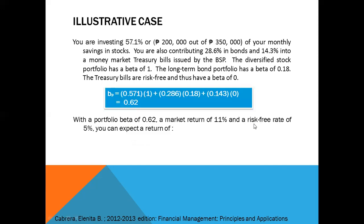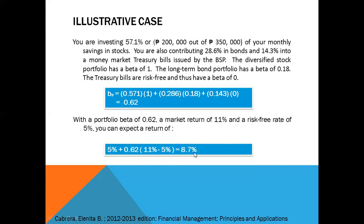With a portfolio beta of 0.62, a market return of 11%, and a risk-free rate of 5%, you can expect a return of 8.7%. That's calculated as: 5% + 0.62 × (11% − 5%) = 8.7%. If you want a higher expected return, you will have to take more risk, which can be done by increasing your investment in the stock portfolio.